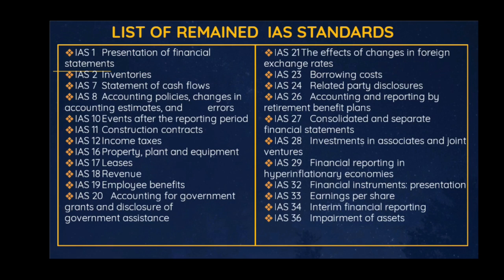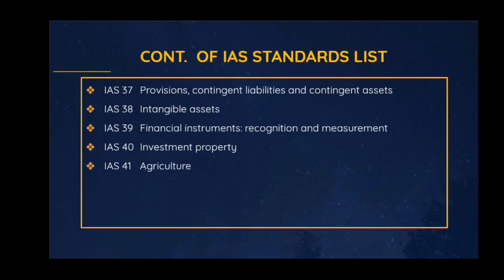Out of the 41 International Accounting Standards, we now have just 28 standards remaining today. These are the ones that appear on screen: IAS 1, 2, 7, 8, 10, 11, 12, 16, 17, 18, 19, 20, 21, 23, 24, 26, 27, 28, 29, 32, 33, 34, 36, 37, 38, 39, 40, and 41 — those are the 28 IAS standards that remain.